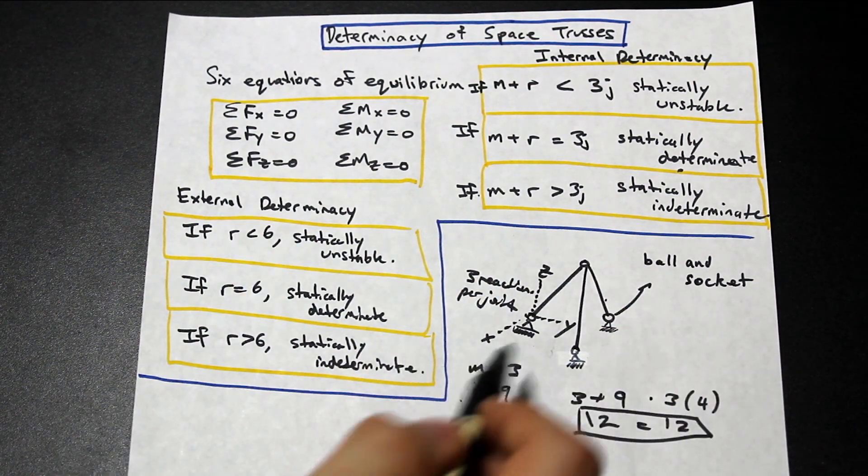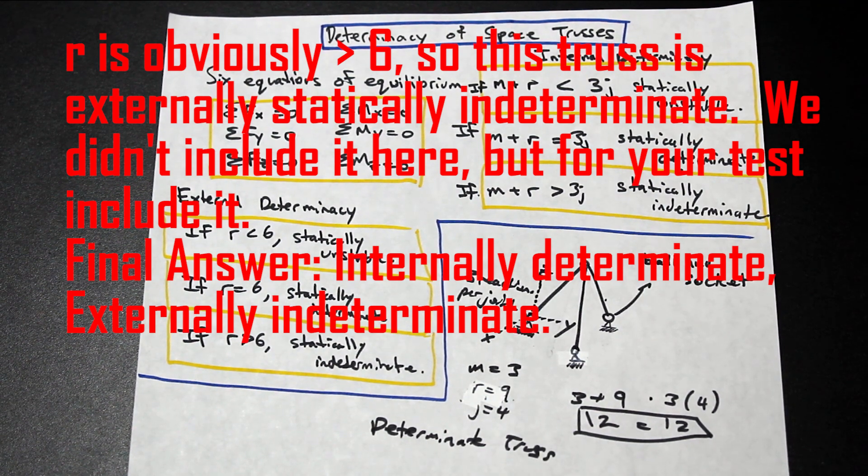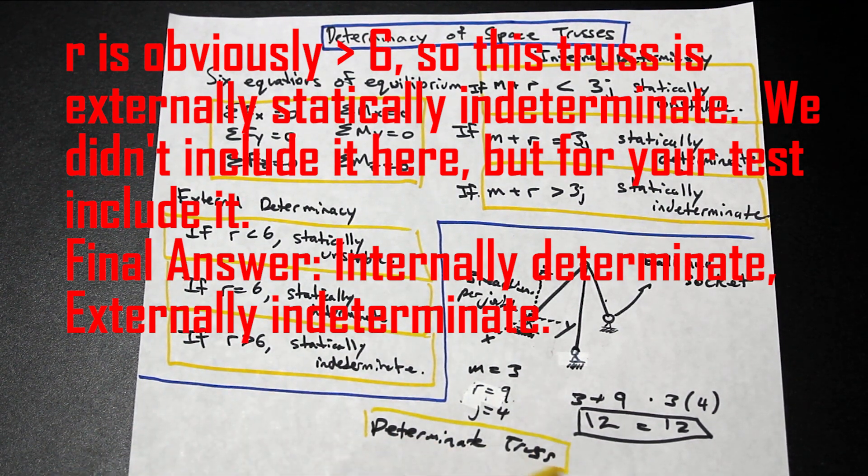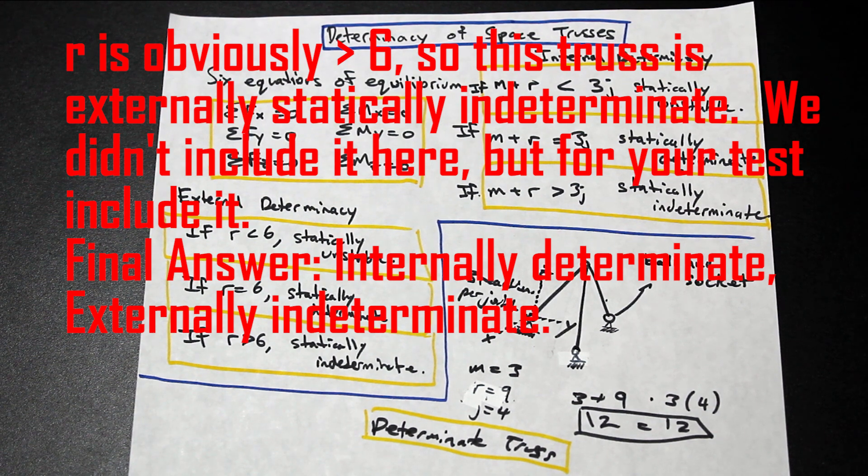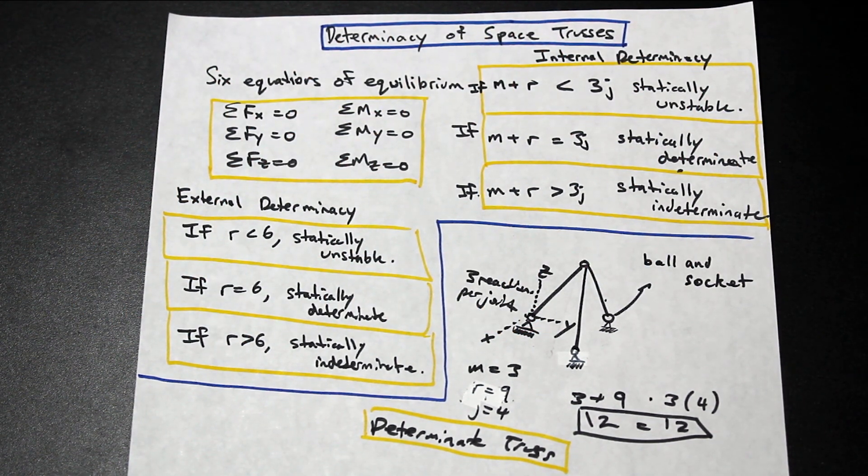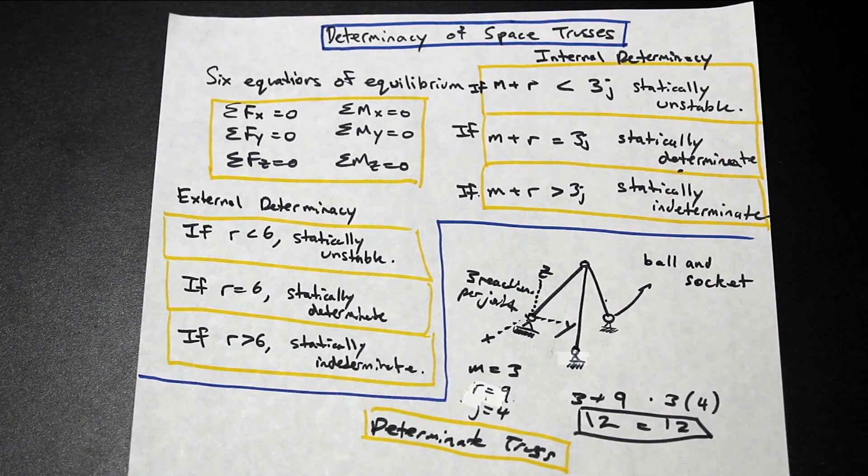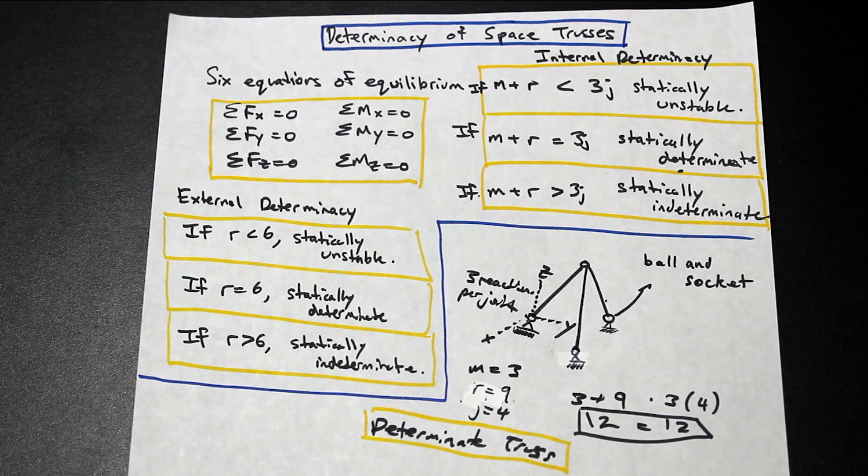And you'll know that this is now a determinate truss. Okay, perfect. So that's the answer. You know what? It's not really a difficult subject, but I think the trickiest thing here is really the reactions. So really understand the reactions. Try and take a look at them and think about where the movement is being restricted and you'll just be fine during the test.